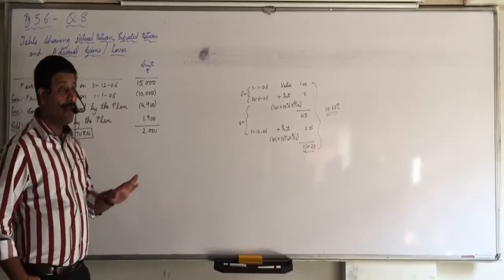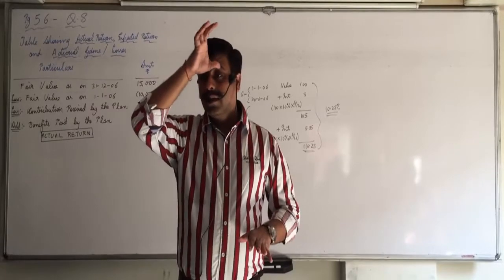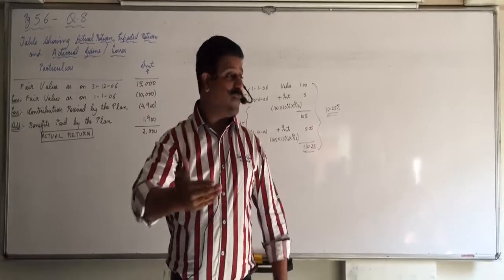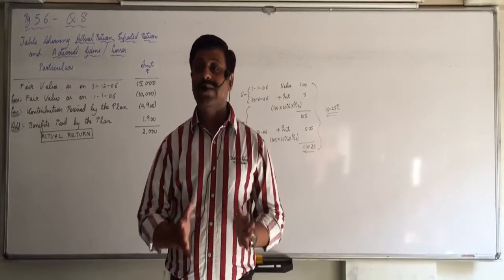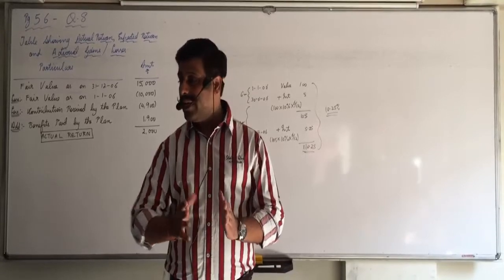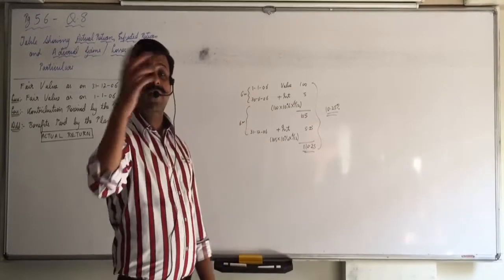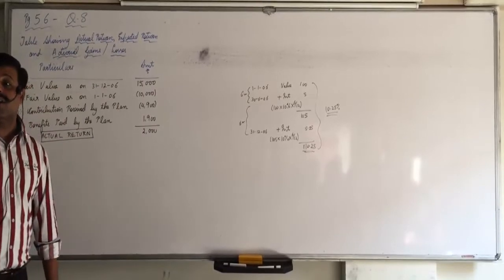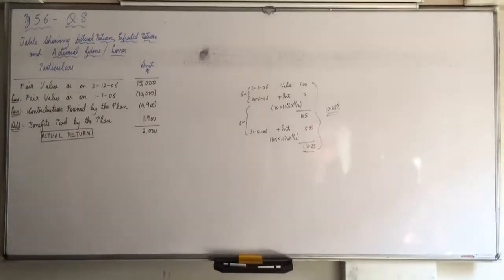Contribution received by the plan means you have further contributed in this year 4900. Value in the beginning was 10,000. Further you invested 4900. Means what are your total investments? 14,900. And the value of that investment is 15,000 at the end of the year. So you receive capital appreciation of what amount? 100 rupees.